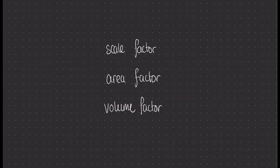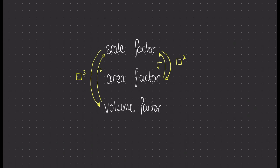What links together our similar shapes are three sets of ratios: the scale factor, the area factor, and the volume factor. To get from the scale factor to the area factor, we have to square. To get from the scale factor to the volume factor, we have to cube. What people are often confused about is how to go from the area factor to the volume factor. To do this we need to retrace those steps: go in the opposite direction by square rooting to get the scale factor, and then cube. So if you have the area factor and need the volume factor, square root the area factor to find the scale factor, then cube both sides. If you have the volume factor and need the area factor, cube root to get the scale factor, then square to find the area factor.